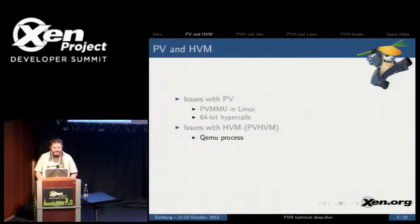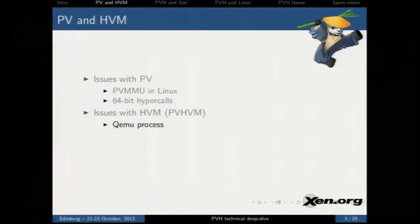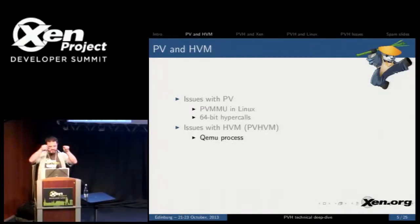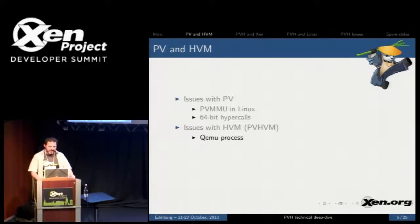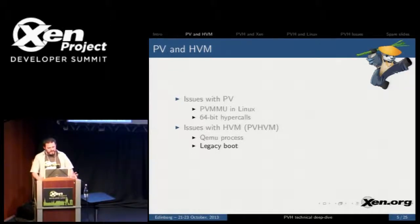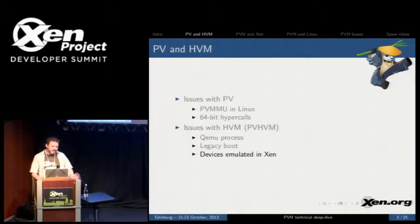We could use HVM. HVM basically makes an entire clone of rings 0 through 3, so now you have four levels of protection for the 64-bit system calls. However, it has some things we're not exactly very happy with. First, you have to have a QEMU process, which is an extra level of complication. You're still doing a legacy boot, starting with 16-bit mode and working all the way up through to 64-bit mode. And there's a number of devices that have to be emulated inside of Xen, like the virtual APIC and virtual timers.